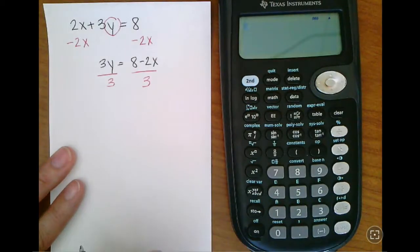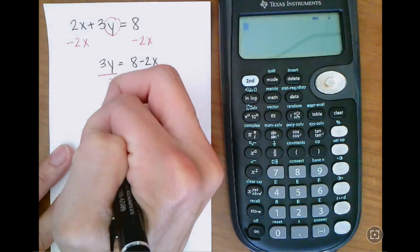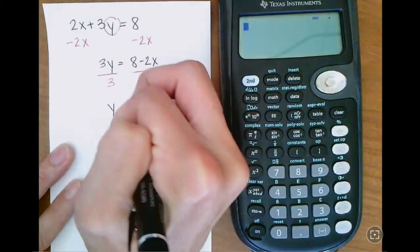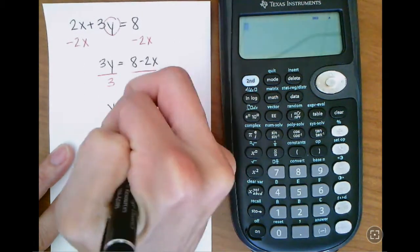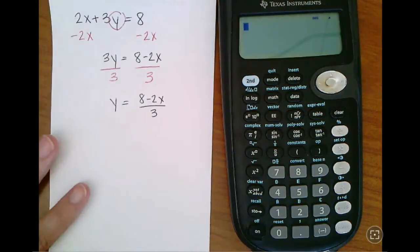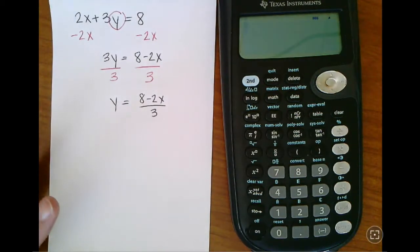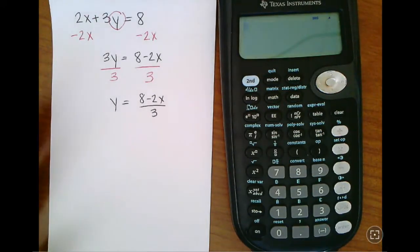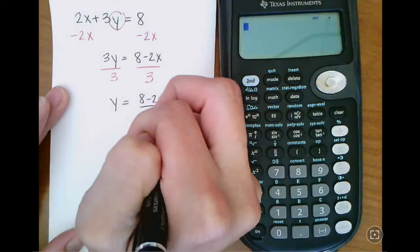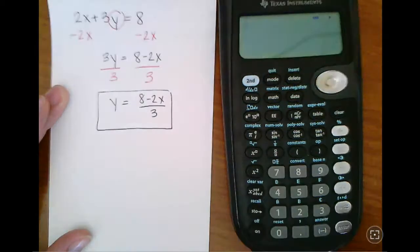To find y equals (8 minus 2x) divided by 3. No reason to go any further to try to break this up or simplify it at all. Every simplification step that I make is just a potential place for an error to happen. So I want to stop as soon as possible when I'm going to type these things into the calculator. So this is what I want to type into the calculator.